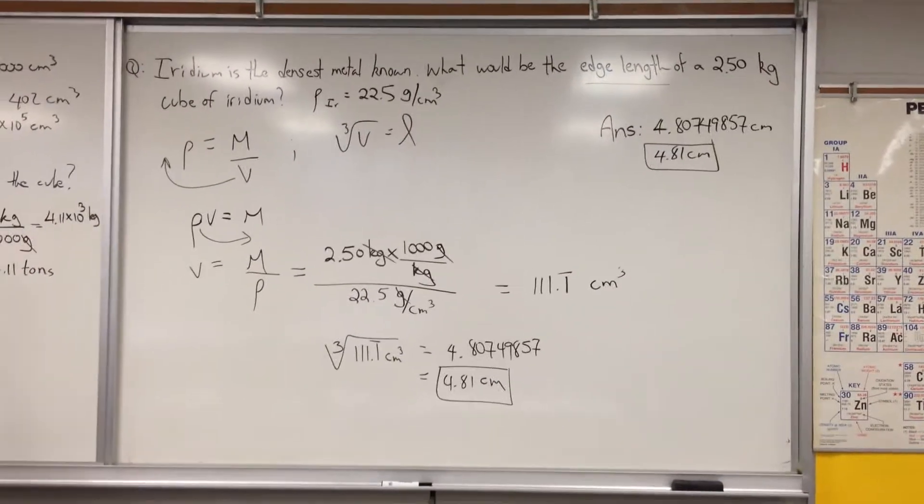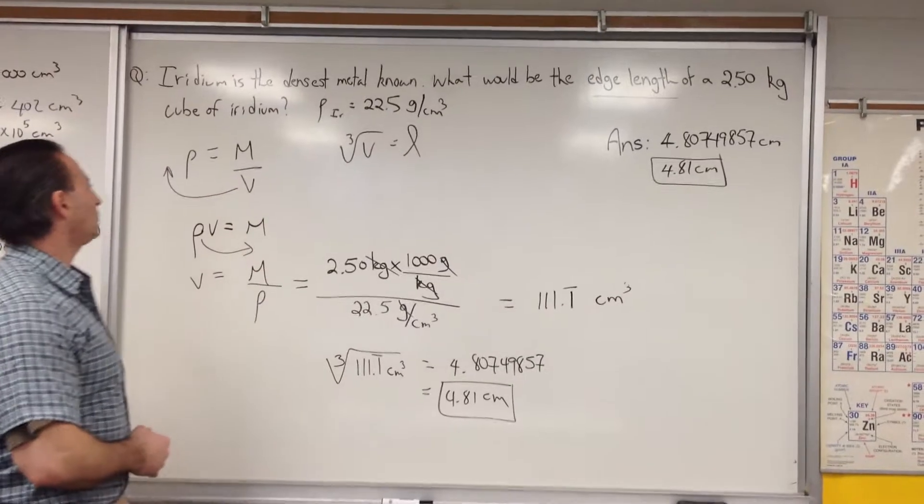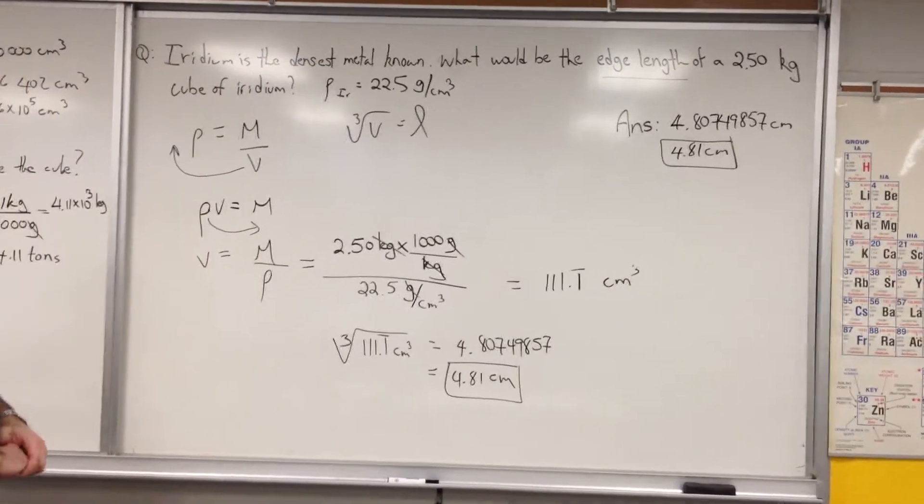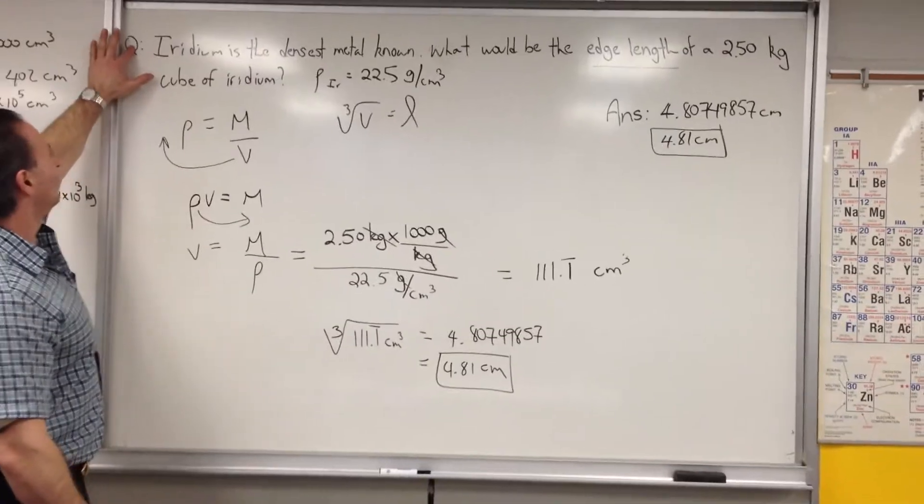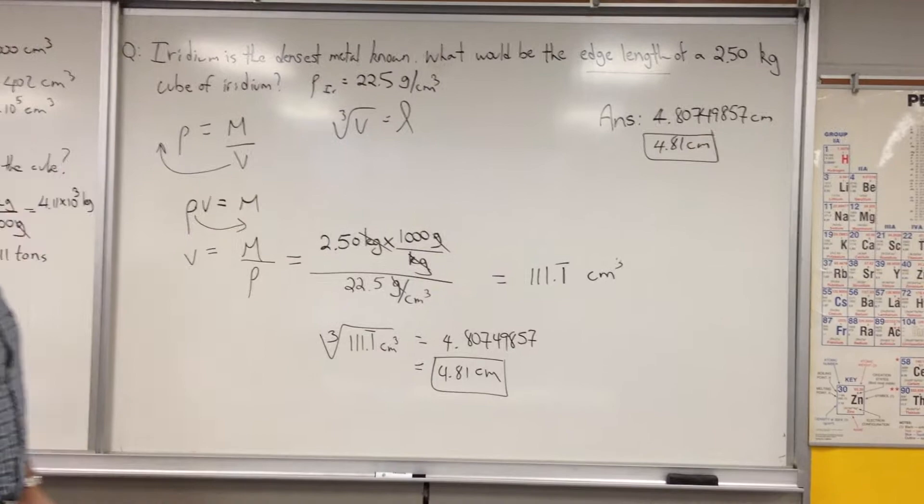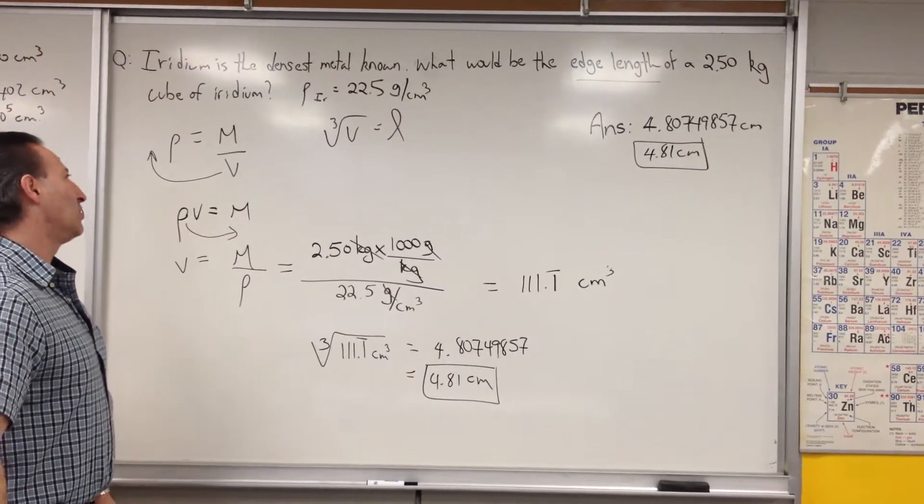Okay, we have a question where we're going to use the density of an object to find out its volume. The question is, iridium is the densest metal known. What would be the edge length of a 2.5 kilogram cube of iridium? The density of iridium is reported as 22.5 grams per centimeter cubed.